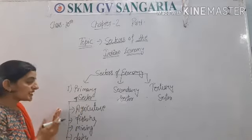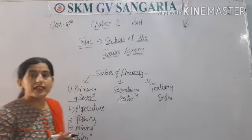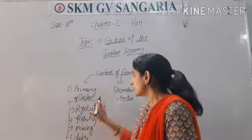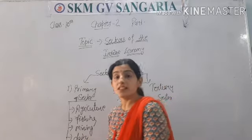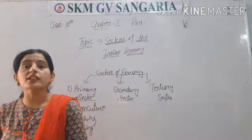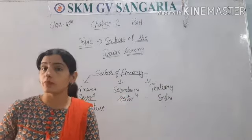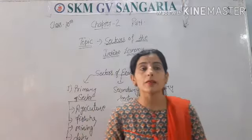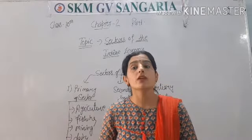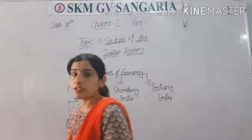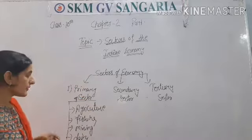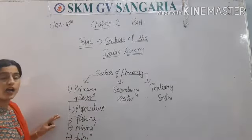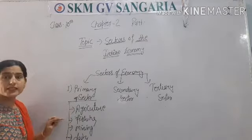These are related to natural resources. Primary means these are the basic activities that are necessary for the economy. If there is no agriculture, then there should be no raw material, and no raw material means there should be no production of manufactured goods. So agriculture, fishing, mining, and dairy — all these are included in the primary sector.